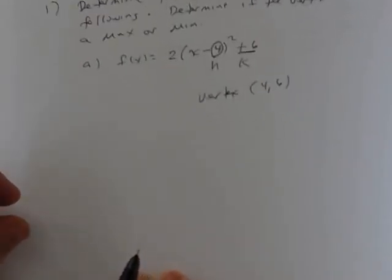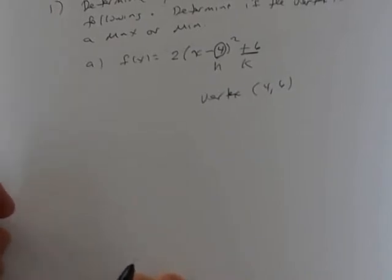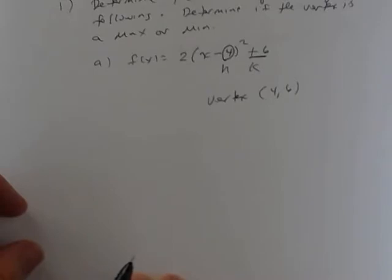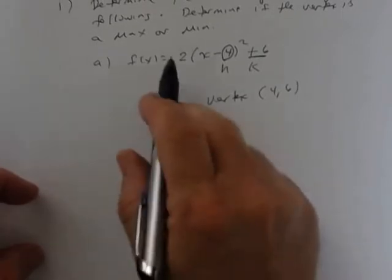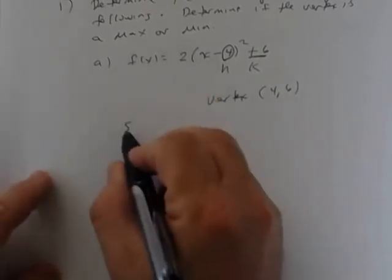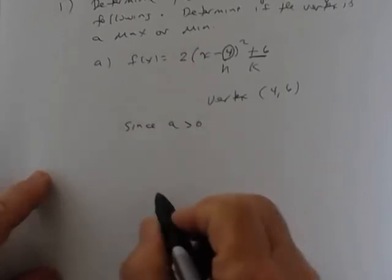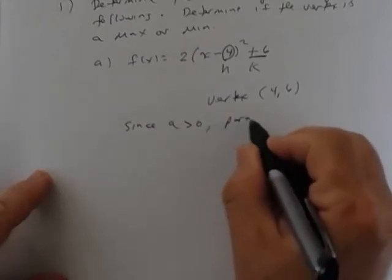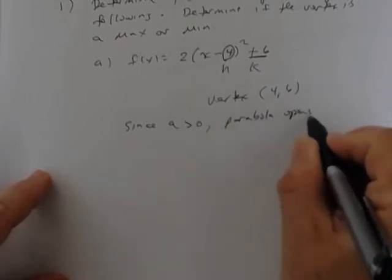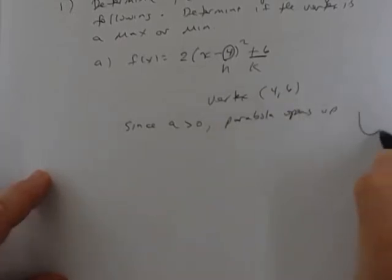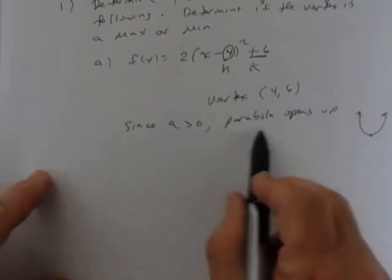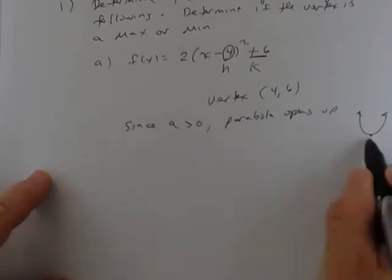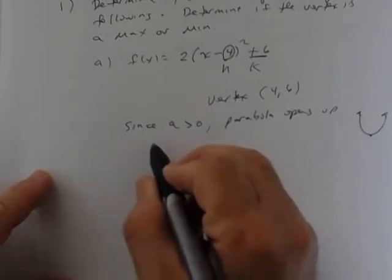Is the vertex a maximum or minimum? You have to look at a. A is 2, which is positive, so since a is positive the parabola opens up. When it opens up, the vertex is at the bottom — so the vertex is a minimum point.